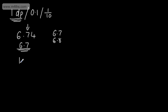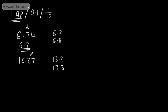So if I had 13.27 to one decimal place, my choices are going to be 13.2 or 13.3. This is the number that could potentially change, so we study the digit to the right. We can see that this is greater than 5.